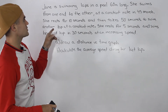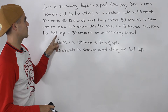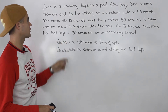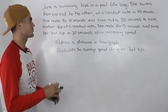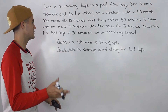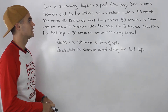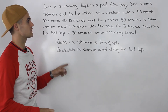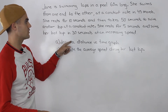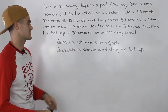So Jane is swimming laps in a pool 60 meters long. She swims from one end to the other at a constant rate in 45 seconds. She rests for 10 seconds and then takes 50 seconds to swim another lap at a constant rate. She rests for five seconds and swims her last lap in 30 seconds at an increasing speed.